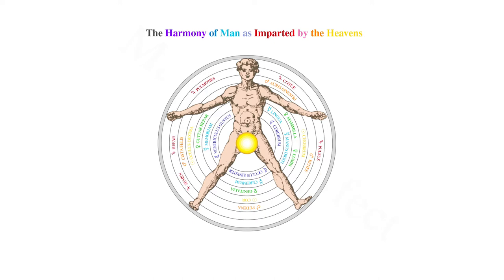Finally, the realm of Saturn influences our oris dextra, or right ear, the dentes, or teeth, the lien, or spleen, and the huésica, or bladder.